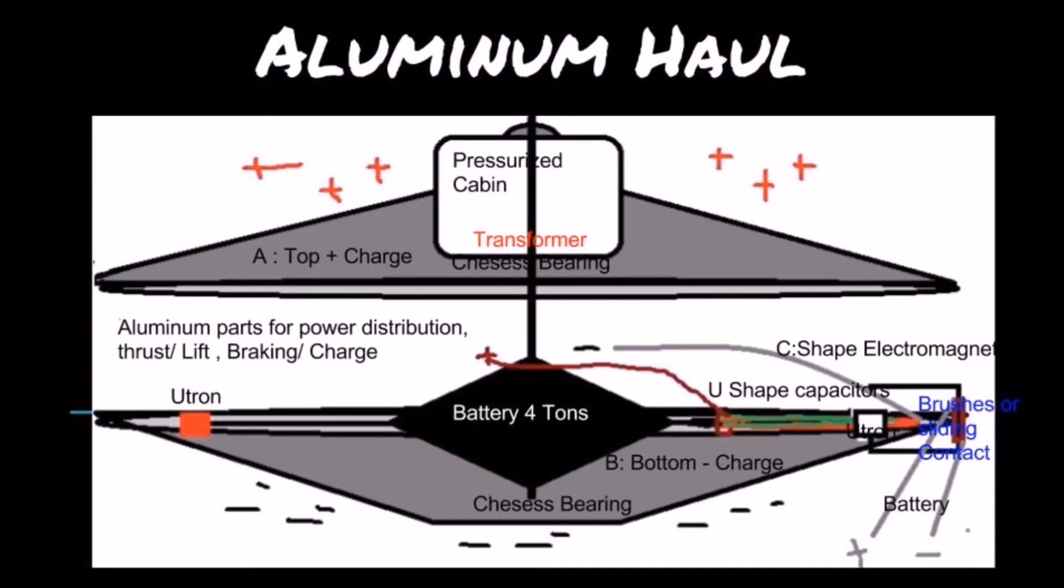The U-tron is filled with electrolyte. The aluminum parts are for power distribution, thrust, lift, braking, and charge.